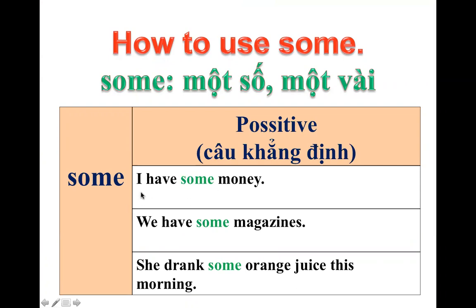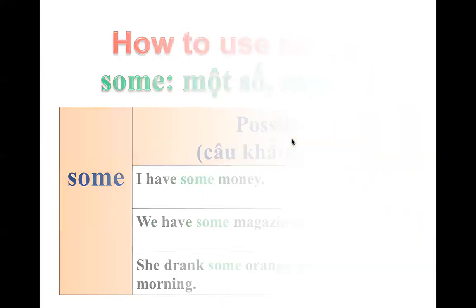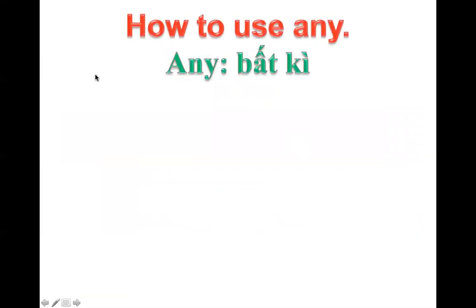I have some money — tôi có một ít tiền, một số tiền. We have some magazines — chúng ta có một số tạp chí. She drank some orange juice this morning — sáng nay cô ấy uống một ít nước cam ép. Thì SOME chúng ta sẽ sử dụng với câu khẳng định các bạn nhé.